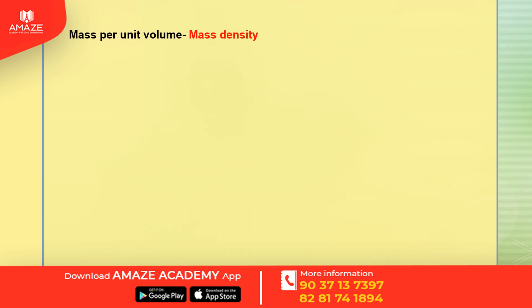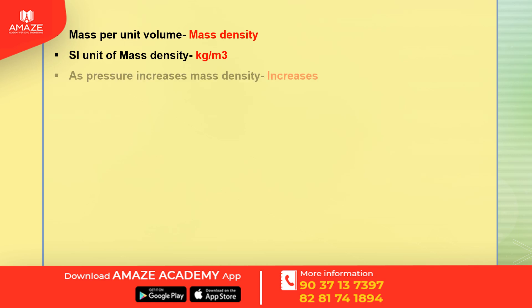Mass per unit volume is mass density. The unit of mass density is kilogram per meter cube. As pressure increases, mass density also increases.